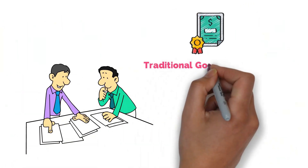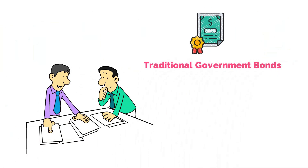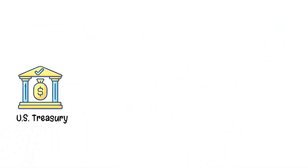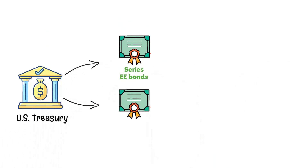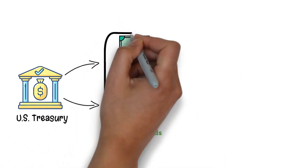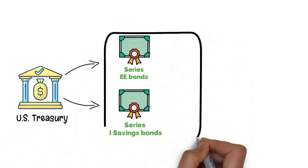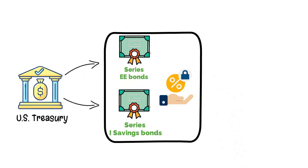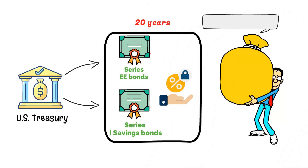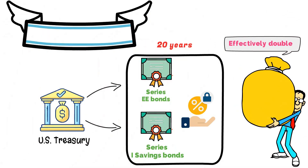Let us cover a few examples of traditional government bonds. The U.S. Treasury offers Series EE bonds and Series I savings bonds. These bonds sell at face value and have a fixed rate of interest. Bonds held for 20 years will reach their face value and effectively double. Series I bonds will have a semi-annual secondary rate that is calculated and tied to an inflation rate.